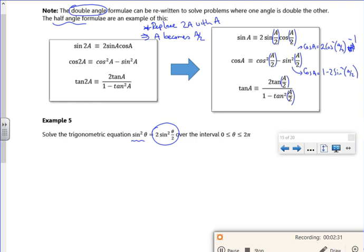Because if you look, I've got 2 sine squared theta over 2. So if I look at using cosA is 1 minus 2 sine squared theta over 2, I can rearrange it. So 2 sine squared theta over 2 is 1 minus cos theta.